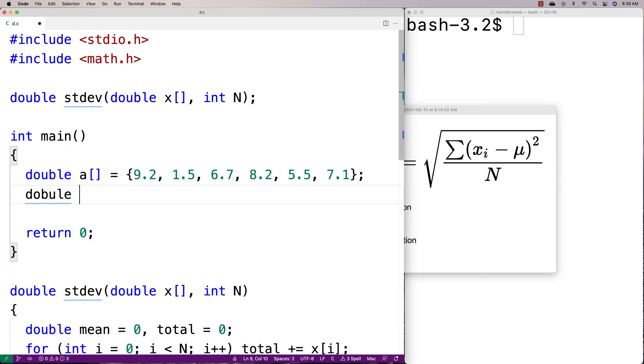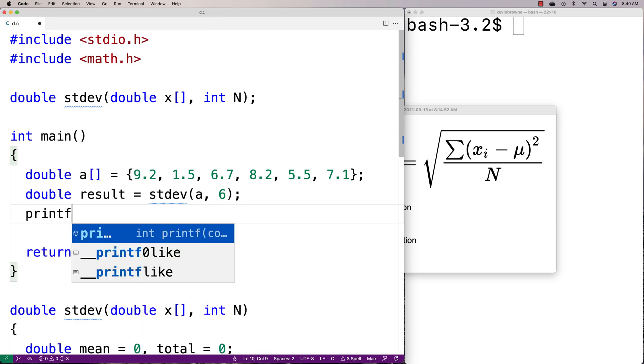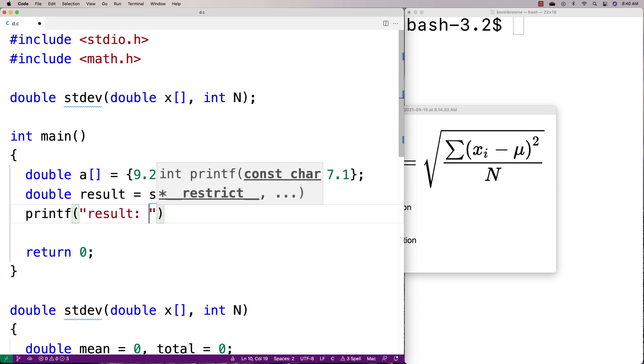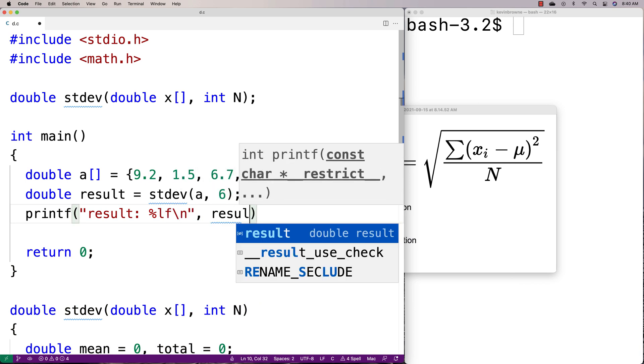Let's test the function. We'll declare double result and call the function with a and the number of elements in a, which is six. Then we'll print the result using printf with percent lf to output what we've got.